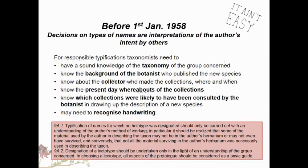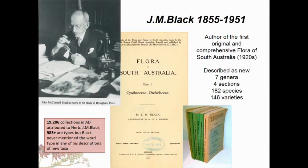Before January 1st, 1958, decisions on what constitutes the type specimen were actually the interpretation of the author's intention by other people. To make that decision you need sound knowledge of the taxonomy of the group, background knowledge of the botanist who published the new species, knowledge of the collector, the present-day whereabouts of collections, which collections were likely consulted by the botanist, and you may even need to recognize handwriting.